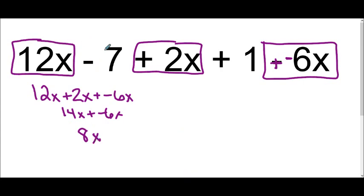Now, think about this. If I have these two constants of negative 7 and positive 1, are those like terms? Yes, constants are always like terms. So I have a negative 7 plus 1, which makes negative 6.